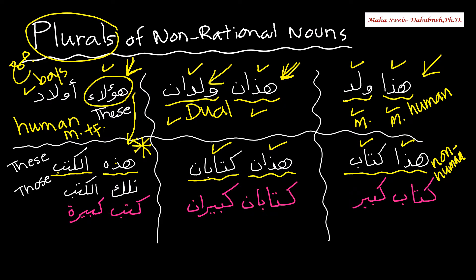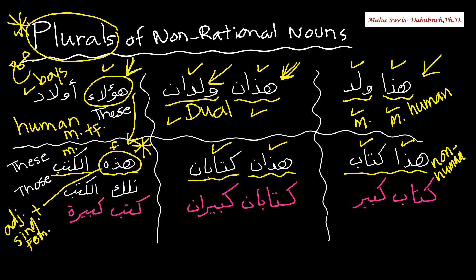Now we never use haula for non-human — haula is only for human. If I want to implement the rule we learned in the previous video: the demonstrative word or the adjective should remain singular and feminine, regardless of the gender of the noun. Here, kitab is masculine, but hadihi is feminine — we have to follow the rule. For plural, the demonstrative word or adjective should remain singular and feminine. So if you want to say 'these' for non-human, you use hadihi; if you want to say 'those,' you use tilka — only for non-human, more than two.